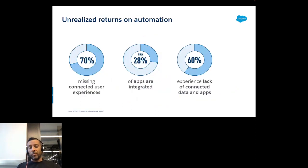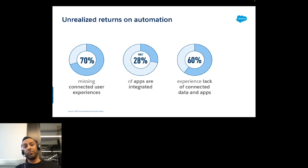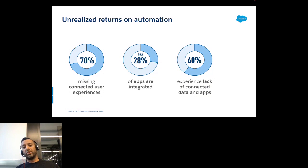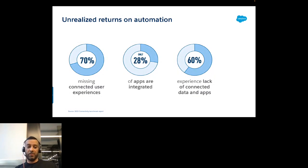Automation is not a new topic — I've been doing automation for the last 15 years. There is an unrealized promise upon automation. When we look at a few numbers from last year's MuleSoft Connect report, we can see why organizations see automation failing. 70% say there is a missing user experience harming automation, and only around 28% of all apps are integrated.